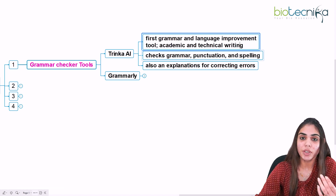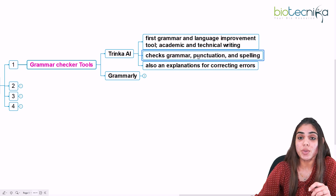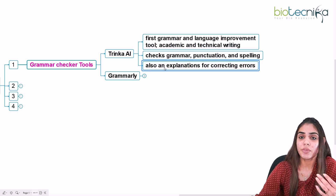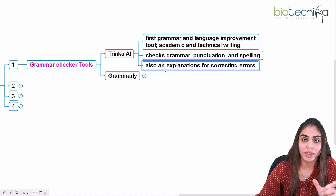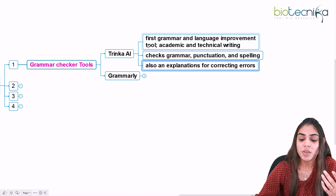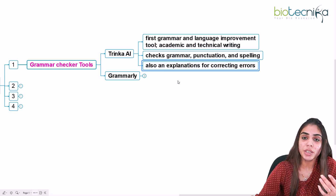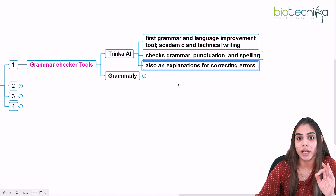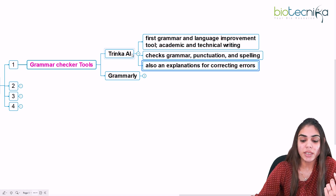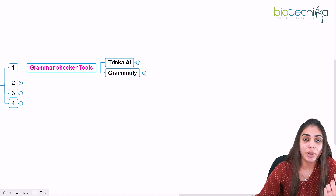You can use Trinka AI to write and enhance the language of your paper. It checks grammar, punctuation, and spelling mistakes. If you have written a grammatically incorrect statement, it will help you correct that statement and also provide an explanation for the correction — which is very helpful. That is the first tool. The second is Grammarly.